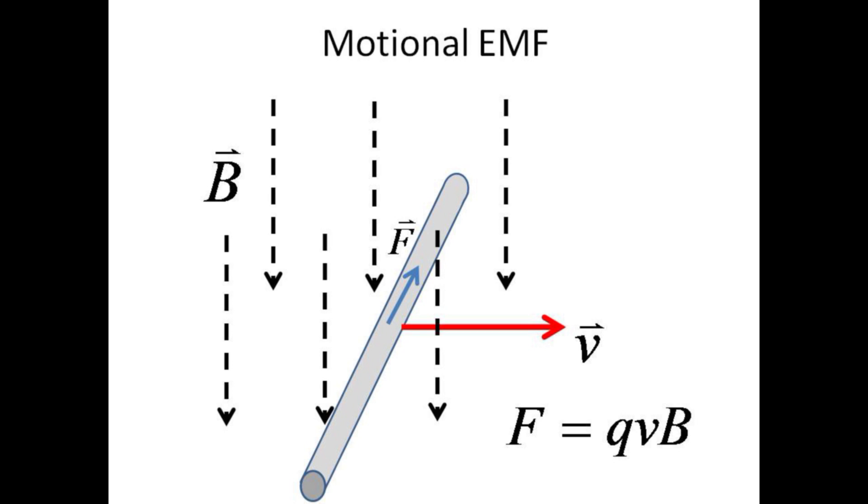You will no doubt recall that the magnetic force on a moving charge is given by the product of Q, V, and B, with the direction given by the right-hand rule.